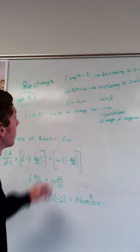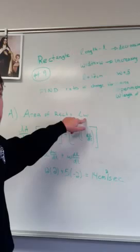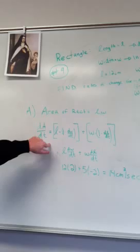We need to find the rate of change for the area. We're given the length and width are 12 and 5, the length decreases at 2 centimeters per second, and the width increases at 2 centimeters per second.